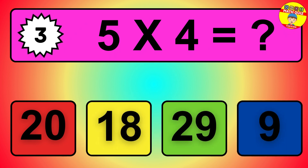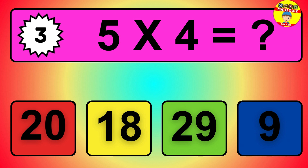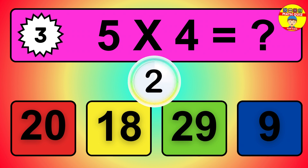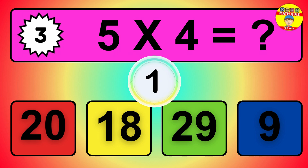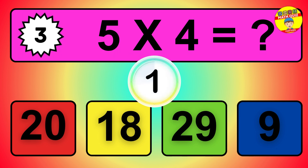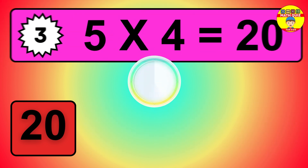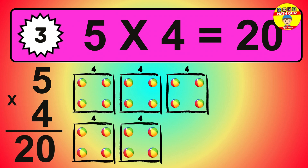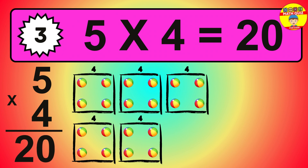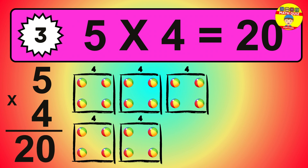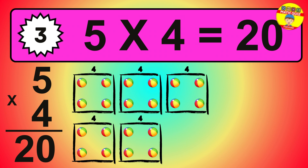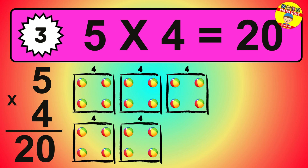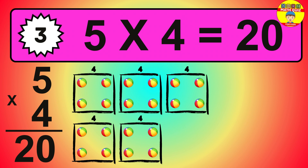Question 3. 5 times 4 equals what? The answer is 5 times 4 is 20. To calculate, we have 5 groups with 4 balls each one. So how many balls do we have? 20 balls.